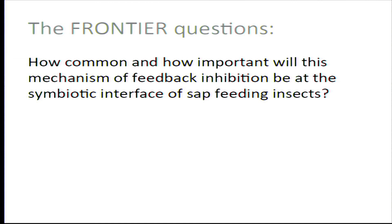This also happens when an aphid switches investment from reproduction to dispersal. When aphids start to become winged individuals, their reproductive output goes down, and there's a tendency for their Bucknera numbers to also decrease. The frontier question I'll leave us with is: how common and how important will this mechanism of feedback inhibition be at the symbiotic interface of other sap-feeding insects and other systems? It's work we've started trying to answer, but there's still a lot more to be done.